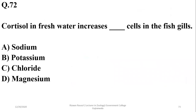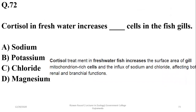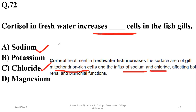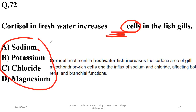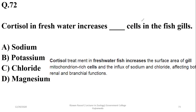Question 72: When shown in freshwater, it increases mitochondrial-rich cells in fish gills, which ultimately increase sodium and chloride ions. There is a slight issue with this question — the cells are not given, the ions are given — mitochondrial-rich cells increase, which leads to increased sodium and chloride ions. I think this question may be awarded grace marks.